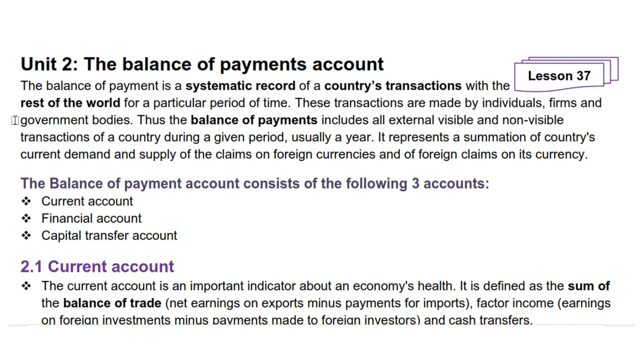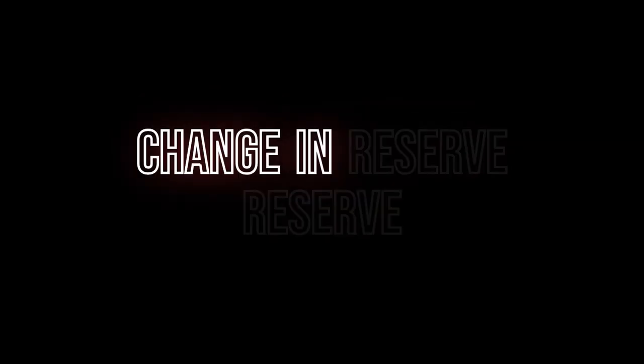It represents a summation of a country's current demand and supply of the claims on foreign currencies and of foreign claims on its currency. The balance of payments account consists of the following accounts: current account, financial account, capital transfer account, and change in reserve.